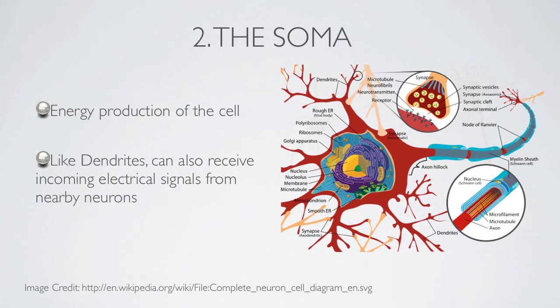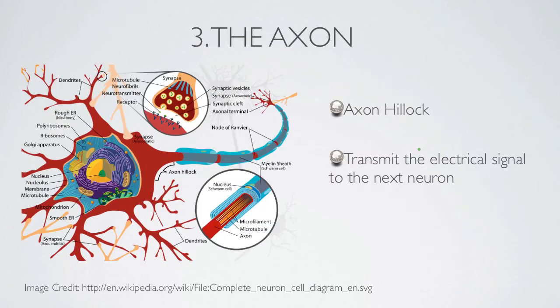The soma is the cell body of the neuron. On top of performing all the basic energy production of the cell, the soma can also receive incoming electrical signals from nearby neurons.